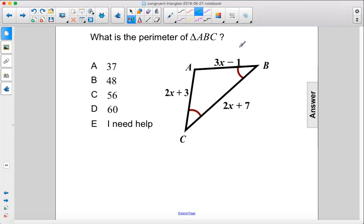What is the perimeter of triangle ABC? We're dealing with an isosceles triangle here. We know it's isosceles because we have these two base angles that are congruent. Therefore, these are the two congruent legs of the isosceles triangle, and this is the base.